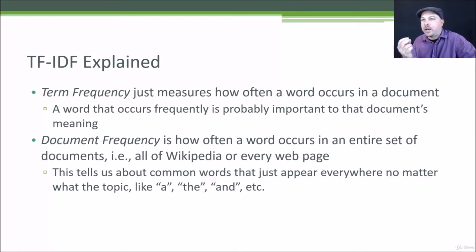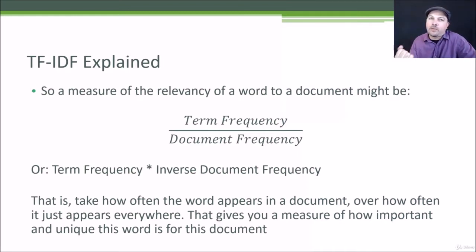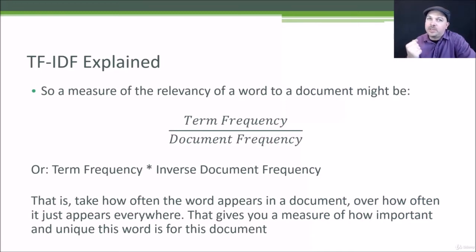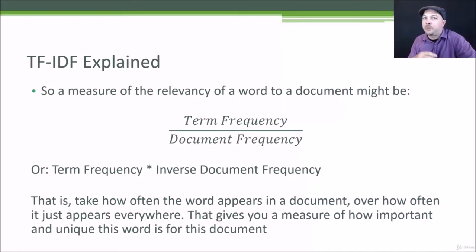Common words like 'a' or 'the' would have a very high document frequency, and I would expect them to also have a very high term frequency. But that doesn't necessarily mean they're relevant to a given document. So if we have a very high term frequency and a very low document frequency for a given word, the ratio of these two things can give me a measure of relevance. If a word occurs very often in a given document but not very often in the overall space of documents, then that word probably conveys some special meaning to this particular document — it might convey what this document is actually about.